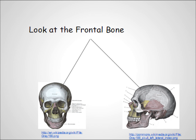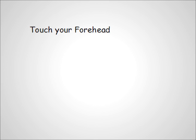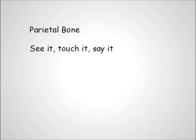For instance, as you are going over the bones of the skull, look at the picture, say the word, and touch the bone. The frontal bone is the bone of your forehead — say 'frontal bone' out loud and place your hand on your forehead while looking at the illustration. The parietal bone is the side, or wall, of the skull. Place your hand on the side of your head while looking at the picture and say 'parietal bone' out loud. It may seem silly at first, but you might just find that it is really helpful.